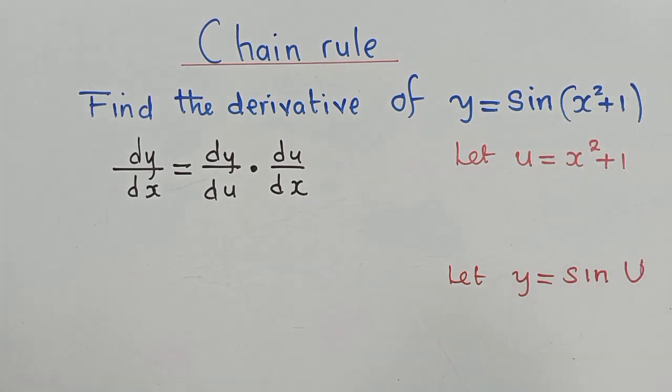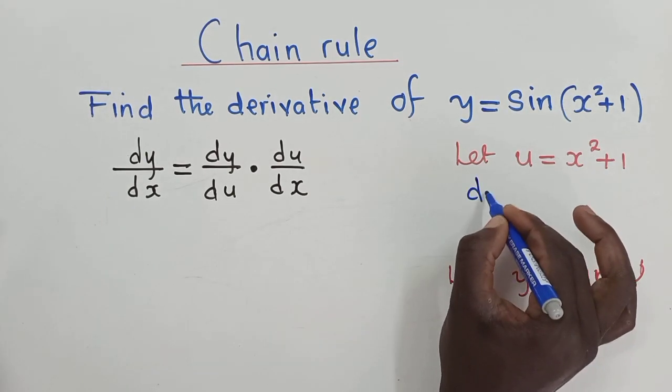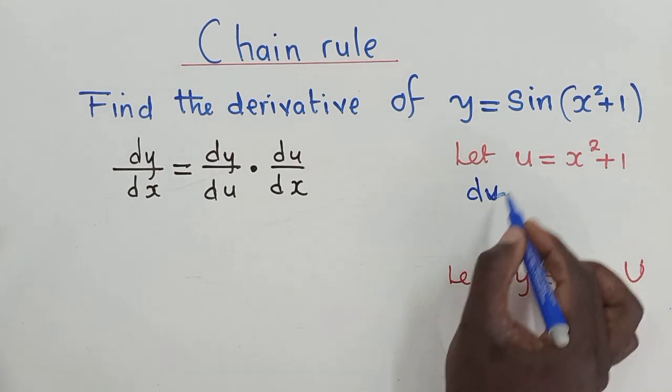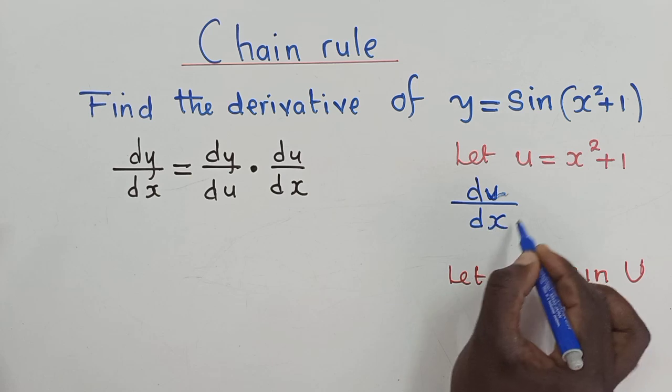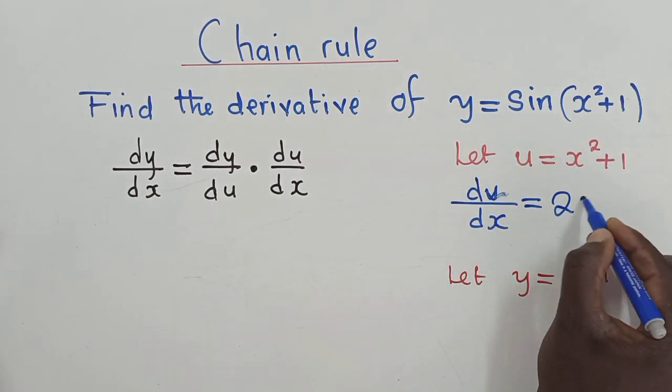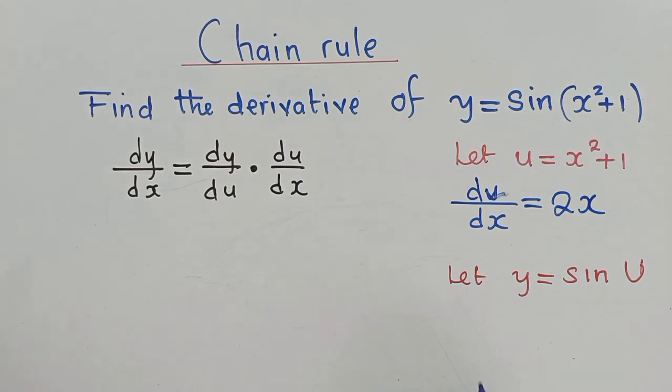So now we can find du dx, because this is u. We are expecting x, so the derivative there will look like this. Here we can find dy du. So what is dy du? It will be cos u.